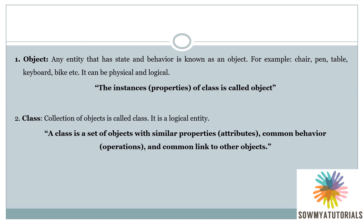Next, what is a class? A collection of objects is called a class. It is a logical entity. Another definition: a class is a set of objects with similar properties, common behavior, and a common link to other objects. One more definition: a class is a user-defined data type which specifies what type of data and what type of functions are present in that class.